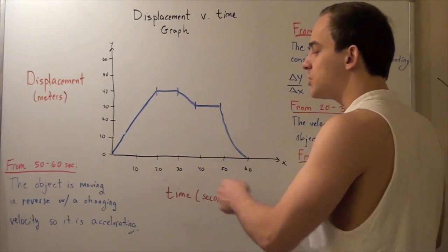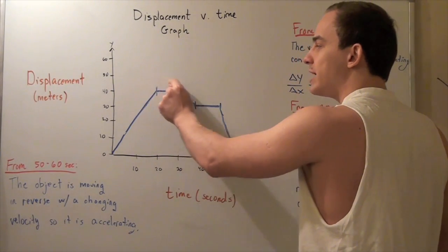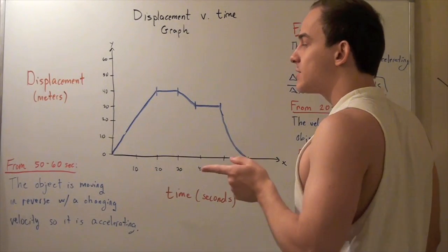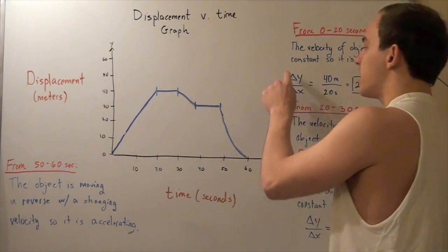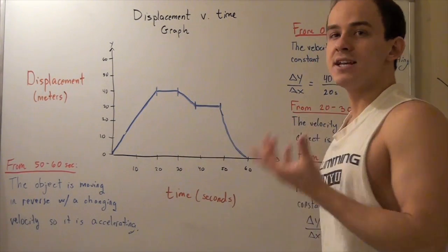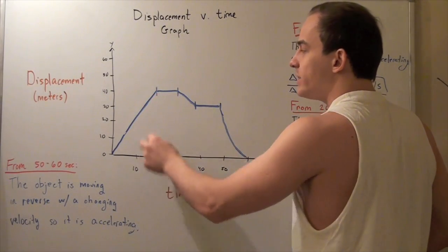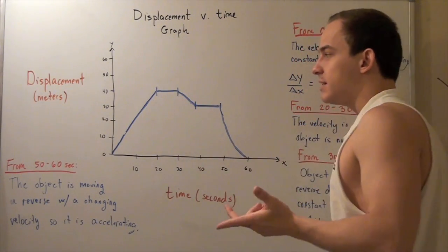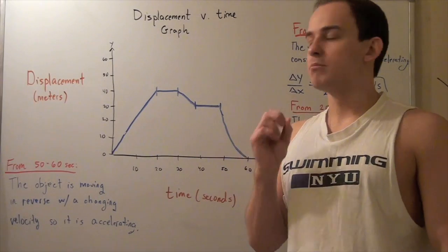Now let's look at what happens when we go from twenty to thirty seconds. We see that we have a straight line with a constant slope, but our change in y is forty minus forty, which gives us zero. So our velocity from this point to this point is zero — our object is not moving. It was traveling at two meters per second, then at twenty seconds it stops and waits ten seconds. Since velocity is zero, the change in velocity is also zero, so acceleration is zero.